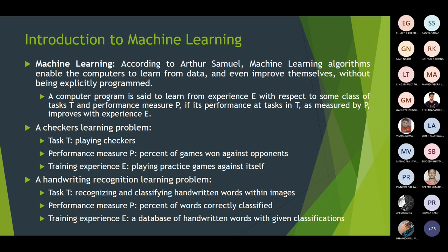Machines can perform tasks without explicit commands or explicit programs because initially we make the machine learning algorithms learn from training data. Then gradually they improve their performance by themselves from the learned data. Once they improve themselves, they can perform any tasks without explicitly being programmed or given explicit human instructions.